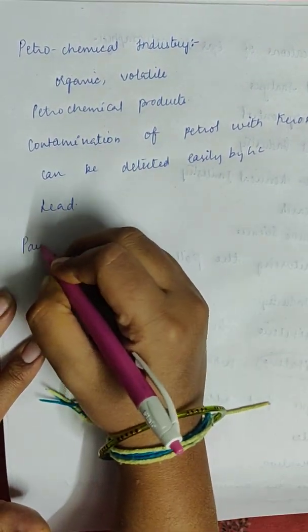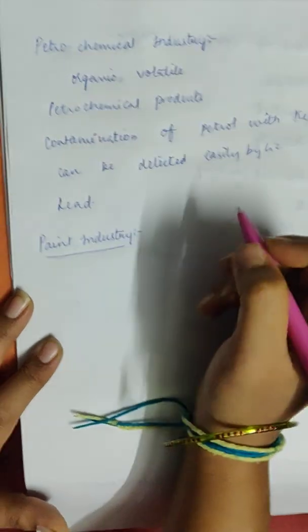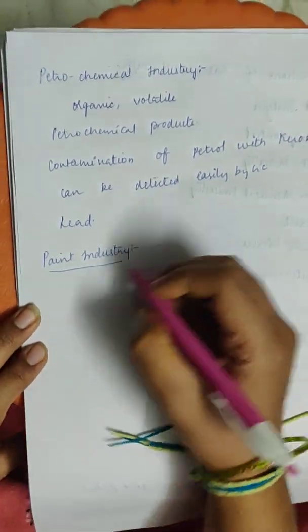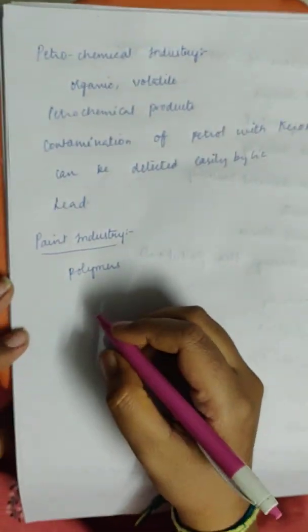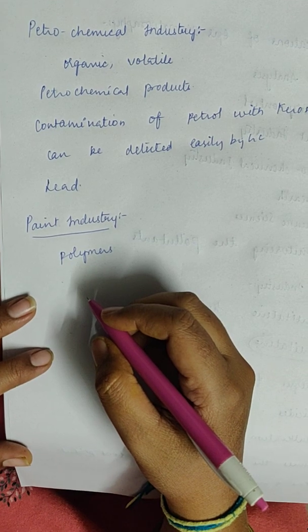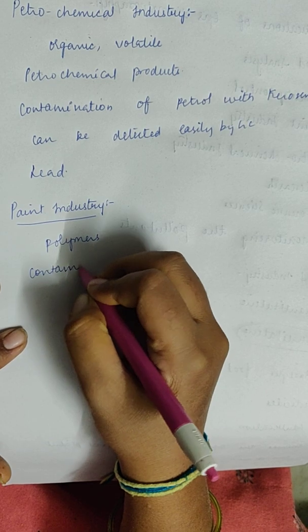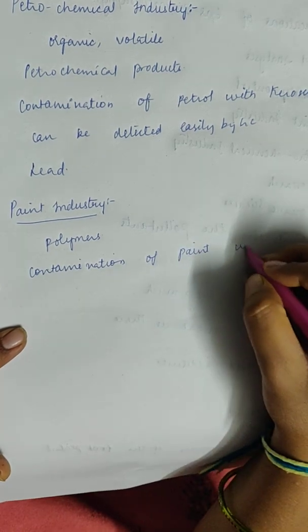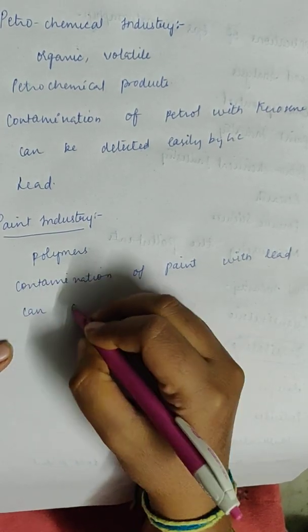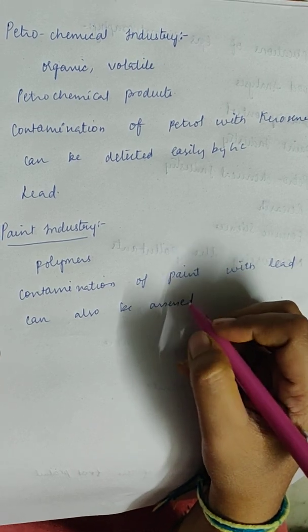In the paint industry, paints are polymers. The quality of paint and contamination of paint with lead can be assessed using gas chromatography.